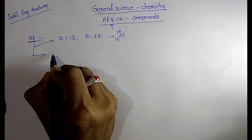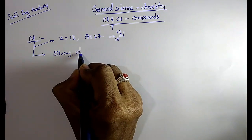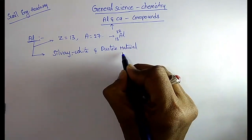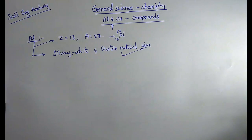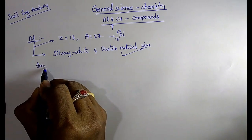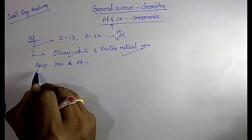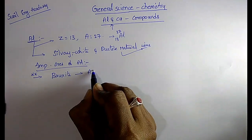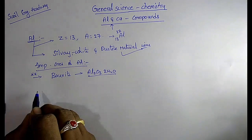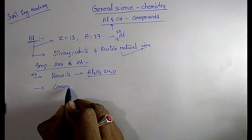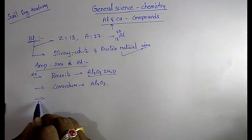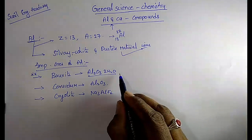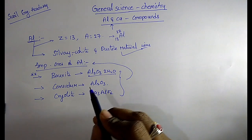Aluminium is silvery white in color and it is a ductile material, meaning we can make wires from it. The important ores of aluminium are: bauxite (Al2O3·2H2O), corundum (Al2O3), and cryolite (Na3AlF6). These three are the important ores of aluminium.